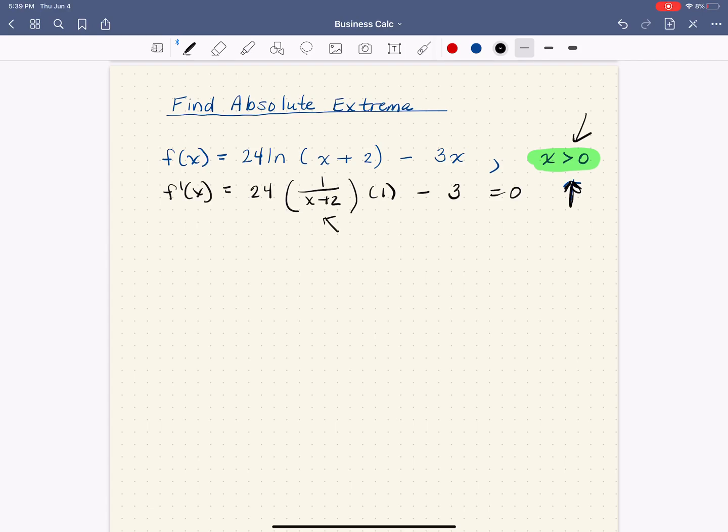So we're good to go with just setting it equal to 0. I am going to clean things up a little bit here and say that this is 24 over x plus 2 minus 3 equals 0, and there's a lot of ways that you can solve this. The easiest is probably going to be to add 3 to both sides, and then multiply both sides by x plus 2.